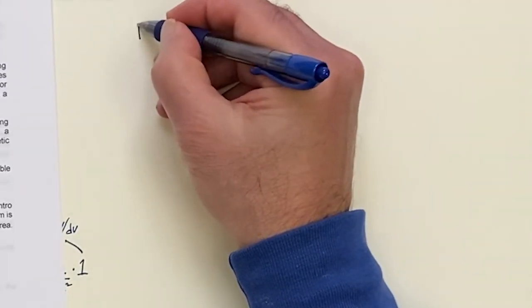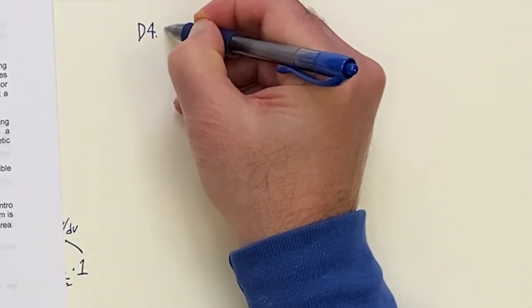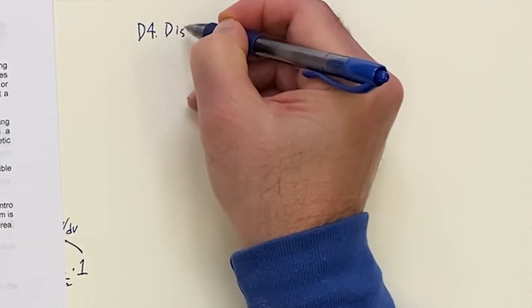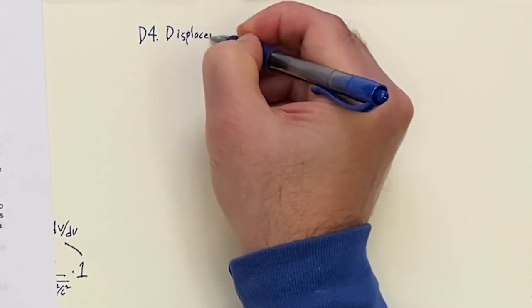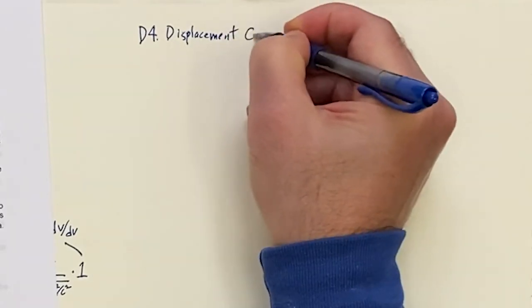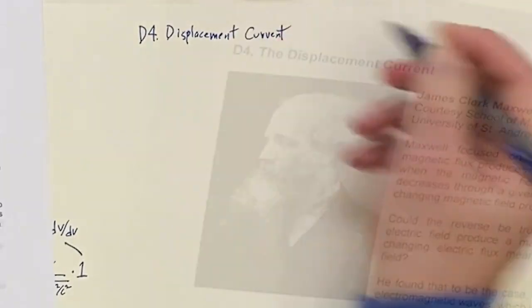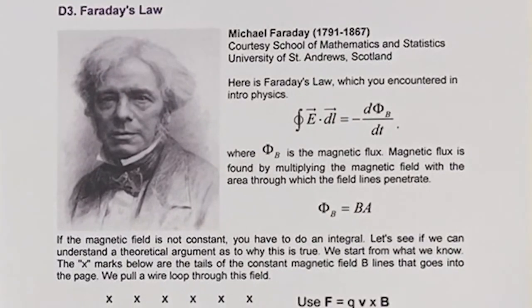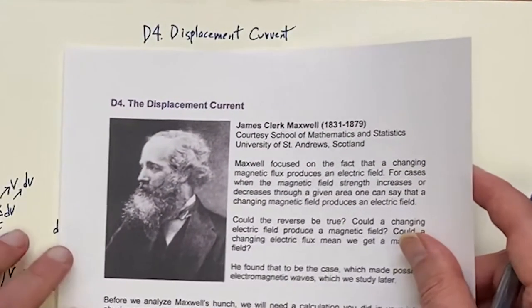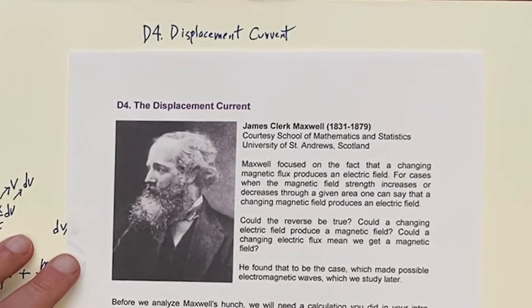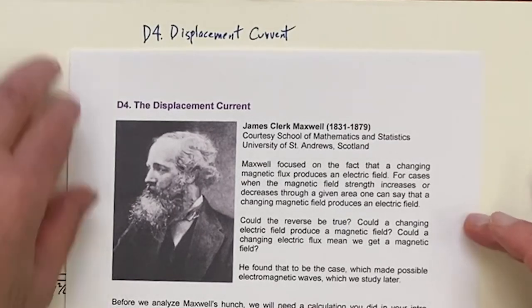One last piece and we're finished: the displacement current. Before that, here's Michael Faraday. This final piece is due to Maxwell — they name all the equations after him, the Maxwell equations.